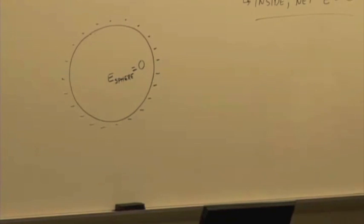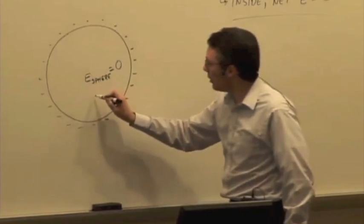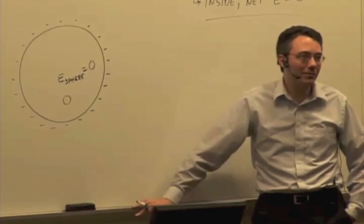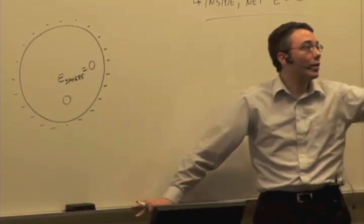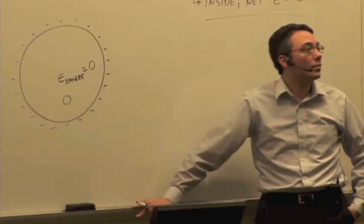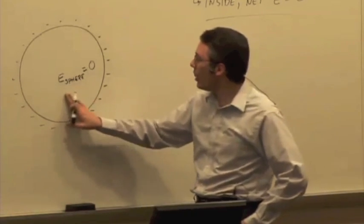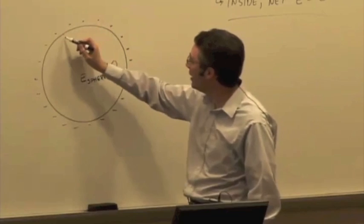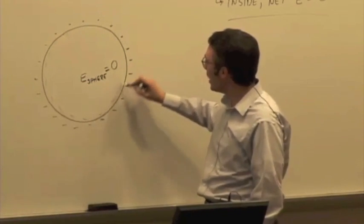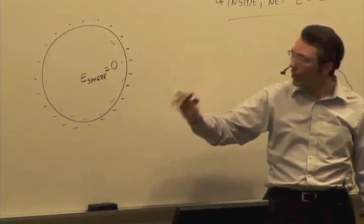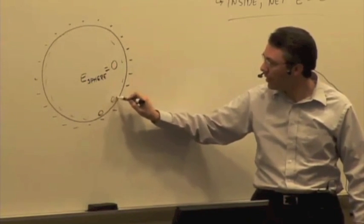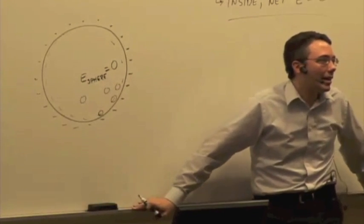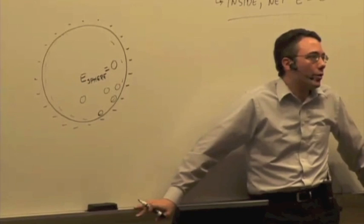If there's zero electric field and you have a neutral molecule in a region where there's zero electric field, how is it going to polarize? It's not going to polarize. If the molecule is not at the center — the result is that the electric field basically everywhere inside this sphere is equal to zero. So even if you're here, or here, or here — if the electric field is zero, then there's no polarization.